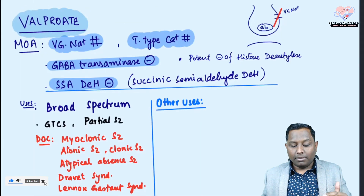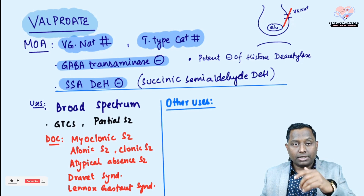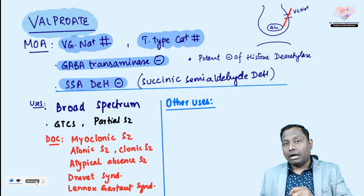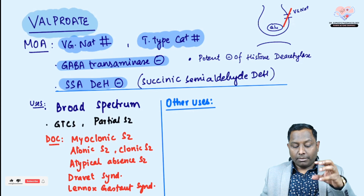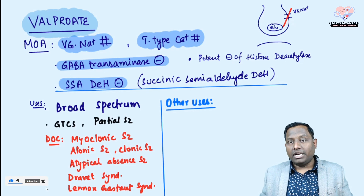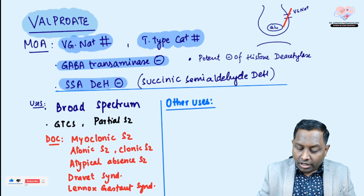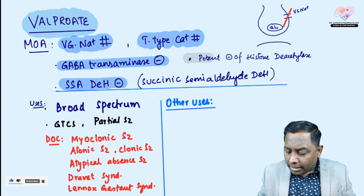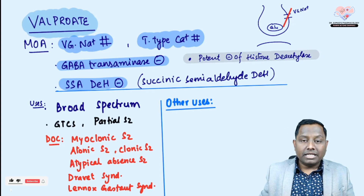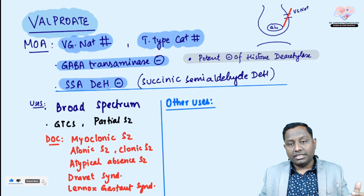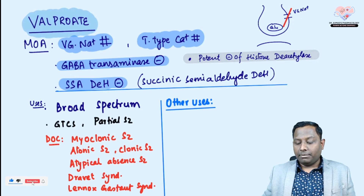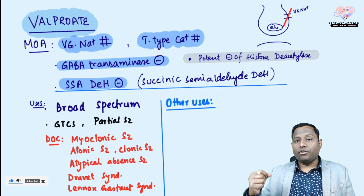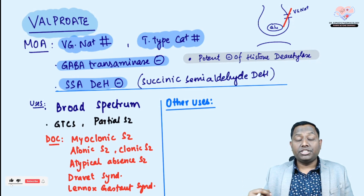This exact pathway was asked in a recent examination — they gave an image and put an 'X' mark asking which drug works there. Vigabatrin is a GABA transaminase inhibitor, but valproate inhibits both GABA transaminase and succinic semialdehyde dehydrogenase. Valproate can increase GABA levels through these mechanisms. Remember, it does not directly act on the GABA receptor or GABA-mediated chloride channel — that is where benzodiazepines and barbiturates work.